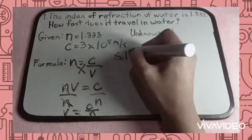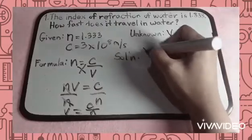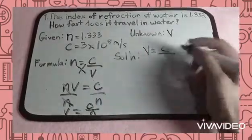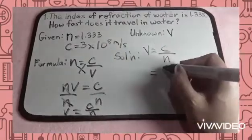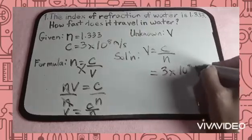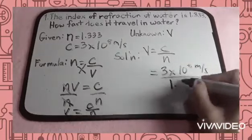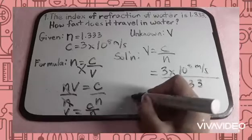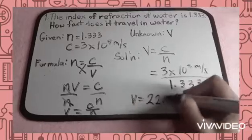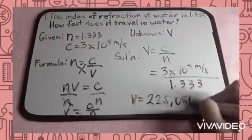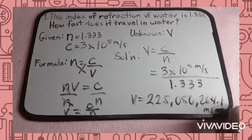We're done with the formula. Let's now solve for the speed of light in water. We can use the formula V is equivalent to the speed of light in vacuum divided by the index of refraction in water. Substituting: 3 times 10 raised to 8 meters per second, divided by the index of refraction of water, which has a value of 1.333. The speed of light in water is 225,056,264.1 meters per second.